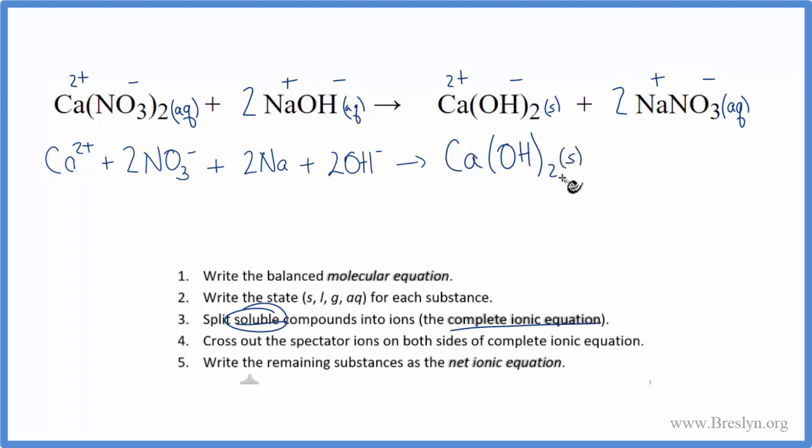Then we have 2 sodium atoms and the 2 nitrates. Clean this up. And now we can cross out the spectator ions.